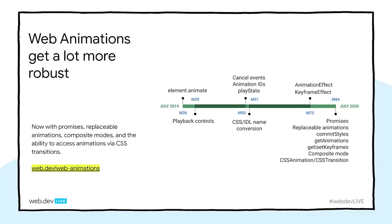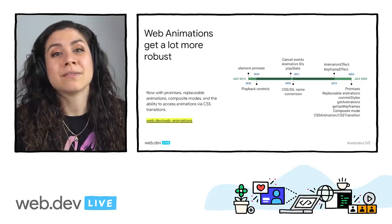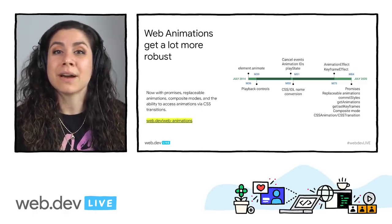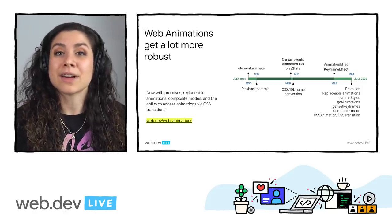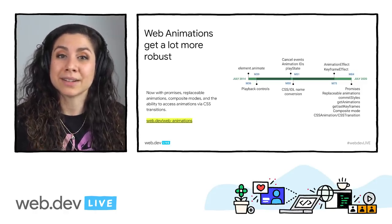The Web Animations API is also getting a lot more robust in Chromium 84. We now have promises, replaceable animations, composite modes, partial keyframes, and a way to access animations from CSS in JavaScript. Check out the blog post on web.dev for more information about these updates and try them out in Chrome Canary yourself.